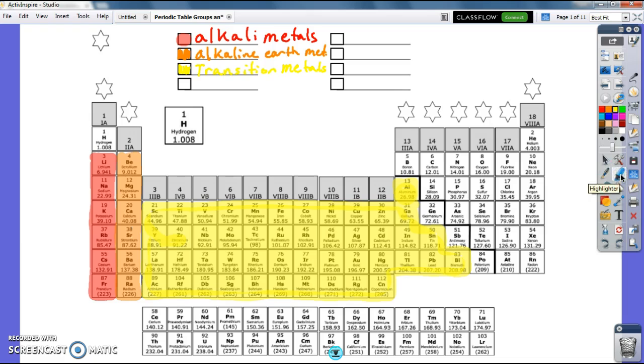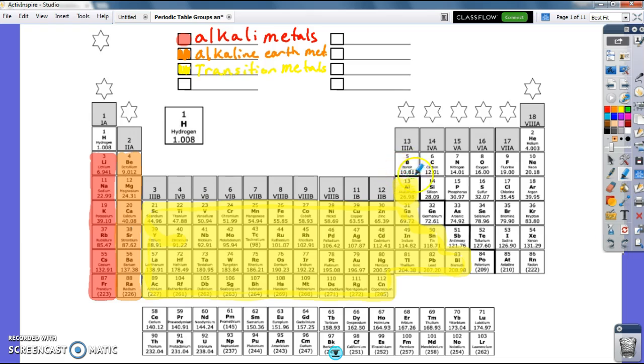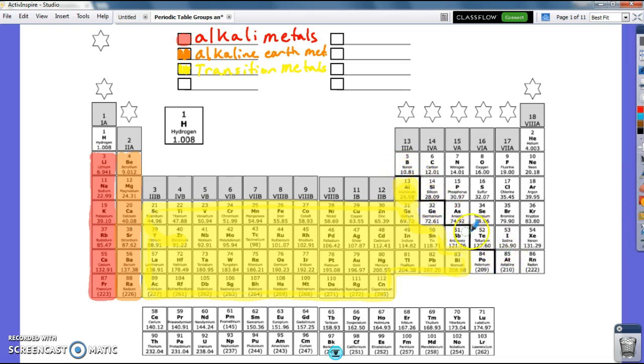Our third group is going to be these guys right along this dark black line. This dark black line is the line between the metals and the non-metals. All of the elements that are along that dark black line, except for aluminum, are called metalloids. These metalloids are metals that behave kind of like metals and kind of like non-metals.